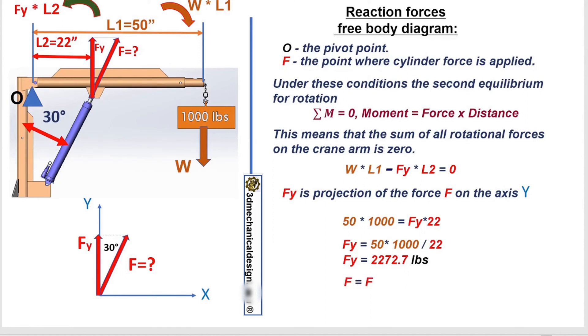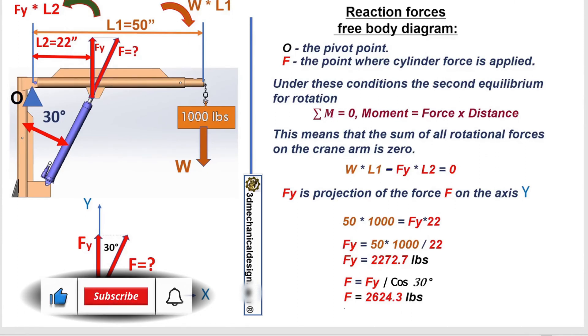F equals Fy divided by cosine 30 degrees. F equals 2624.3 pounds.